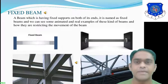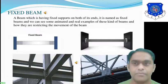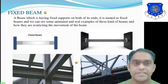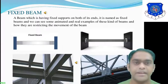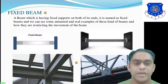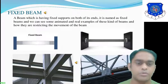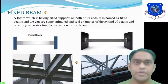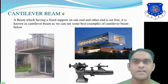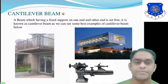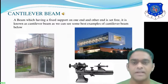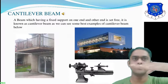This is the example of a fixed beam, in which the beam is fixed from both ends. A beam which has fixed supports on both of its ends is named a fixed beam. We can see animated and real examples of this kind of beam and how they restrict the movement. The original structures in which the beams or components are fixed from both ends are known as fixed beams.